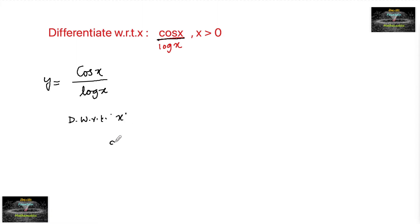So we have dy/dx equals d/dx of cos x upon log x. This is in the form of u by v, so let us apply the quotient rule. u by v whole dash is equal to